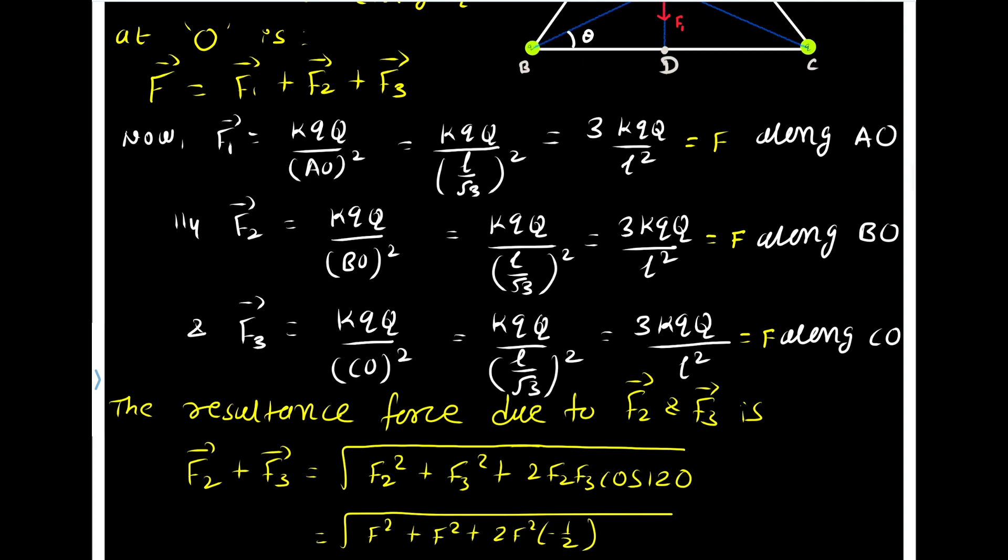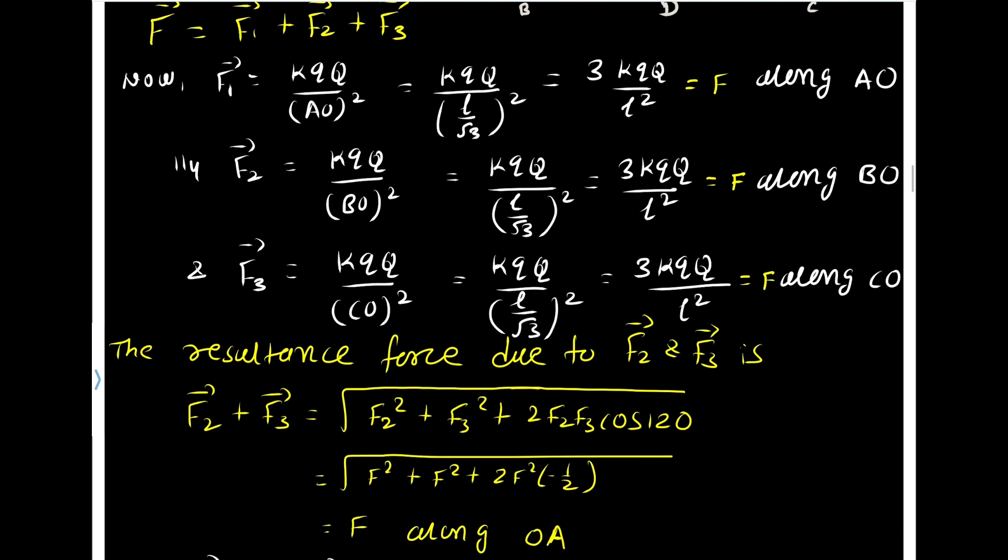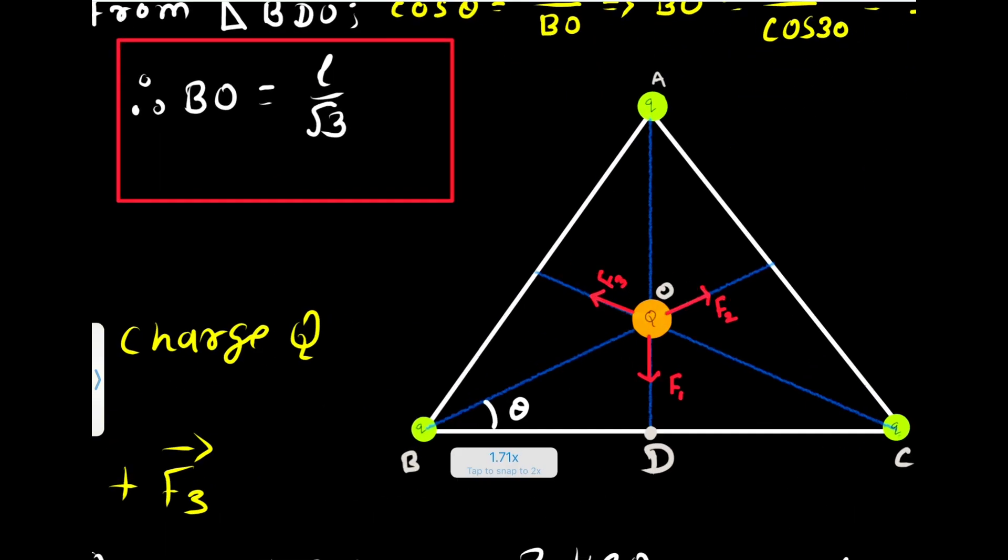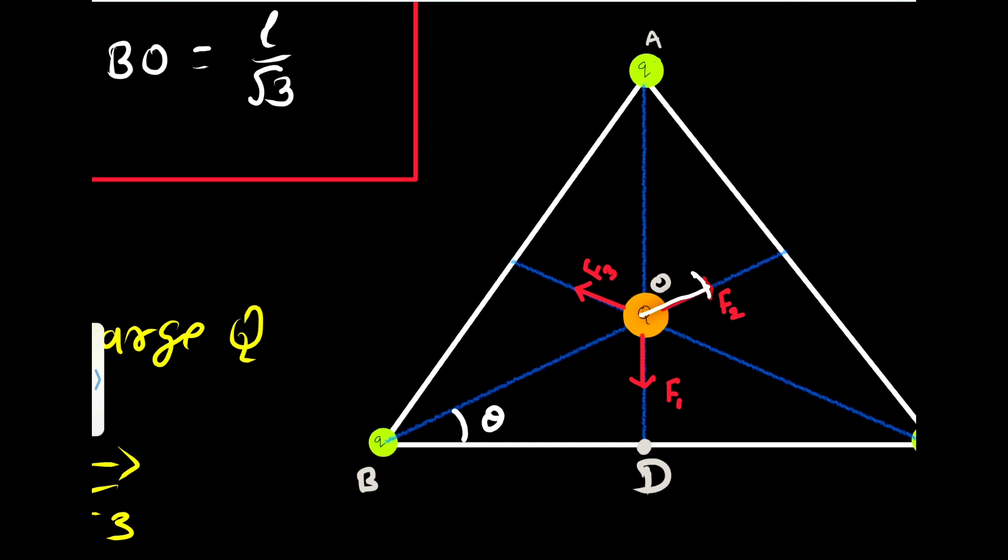Now here we have three forces. So we will use parallelogram and we will consider first two forces. Then the resultant we will add with the third one. So let us find the resultant due to F2 and F3. So we are interested to find the resultant of F2 and F3. Now when F2 and F3 are aligned like this, then they are actually equal. So the magnitude of F2 is F and magnitude of F3 is also F and the angle between them is 120.